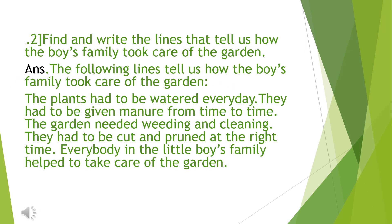Now the next question. Question No. 2: Find and write the lines that tell us how the boy's family took care of the garden. Answer: The following lines tell us how the boy's family took care of the garden. The plants had to be watered every day. They had to be given manure from time to time. The garden needed weeding and cleaning. They had to be cut and pruned at the right time.